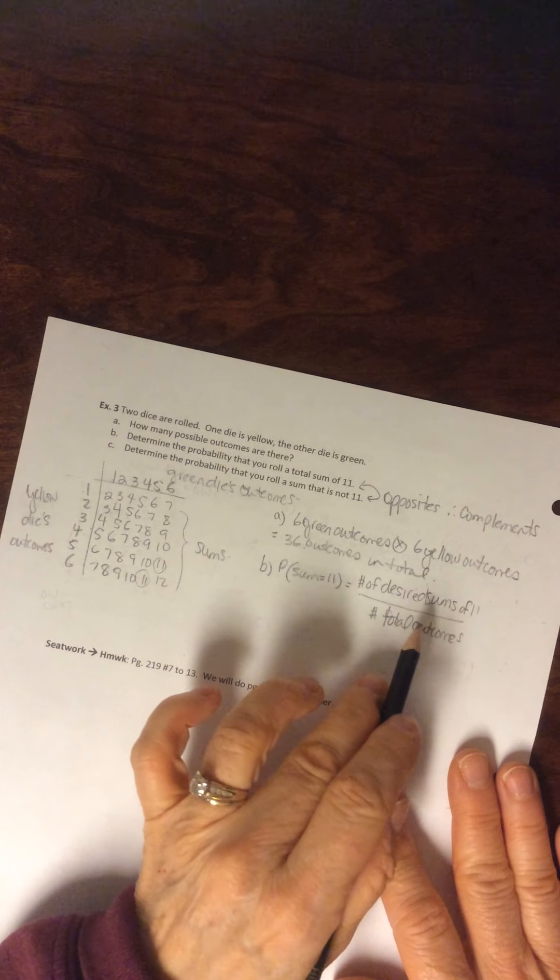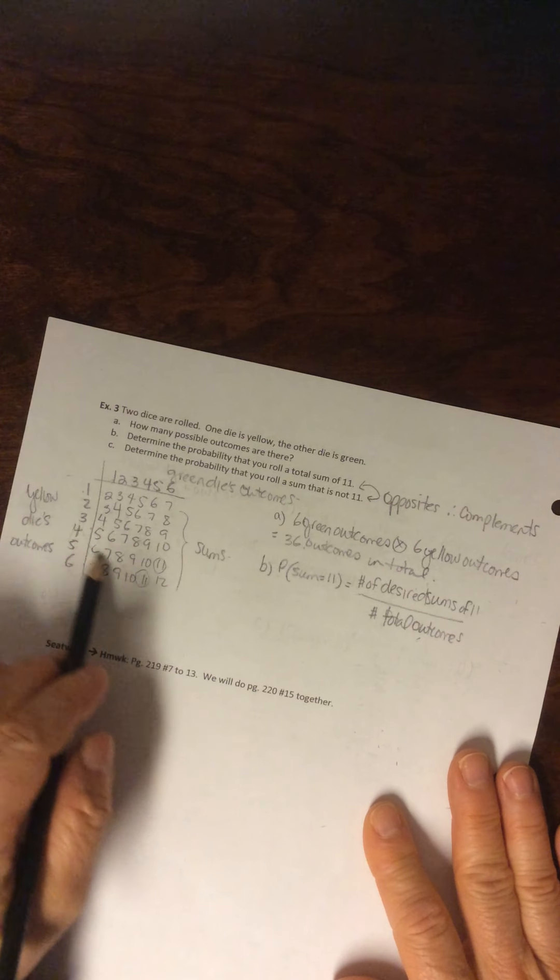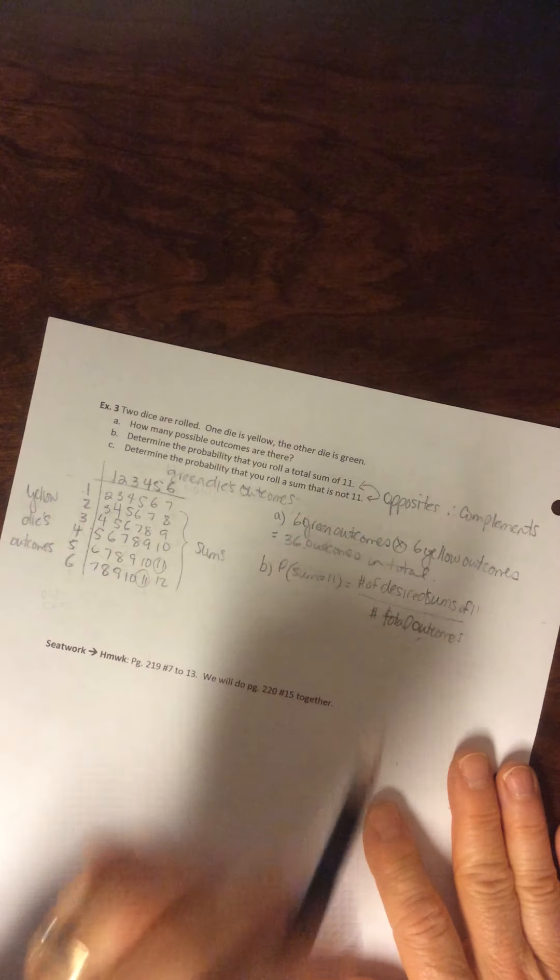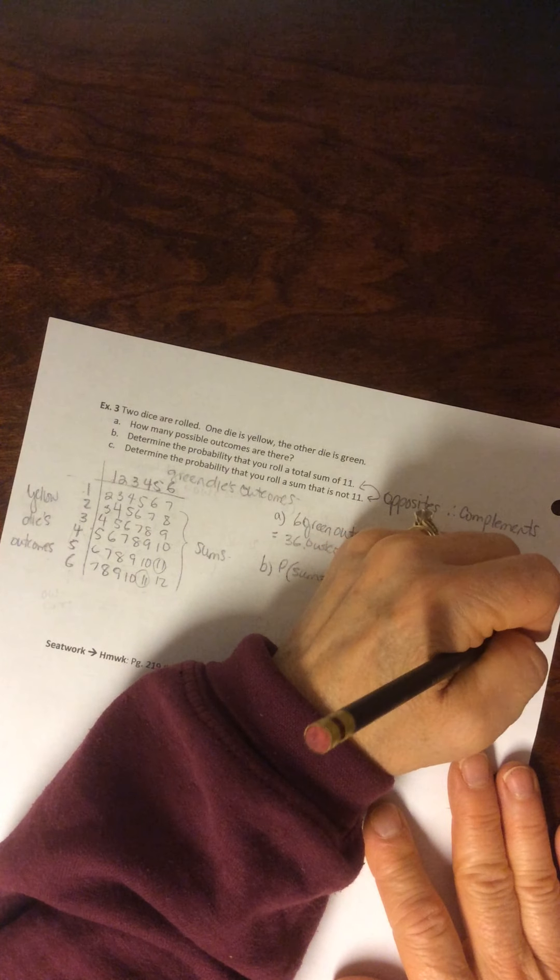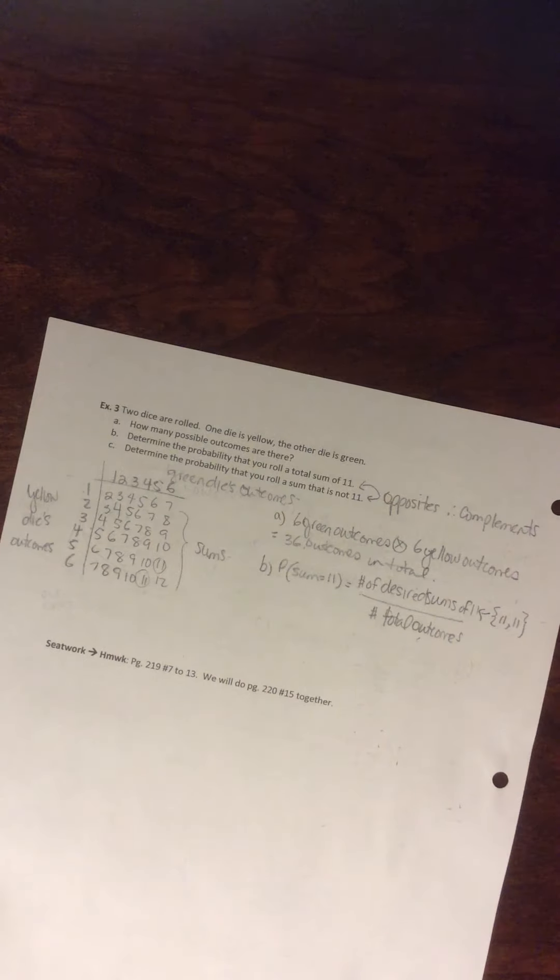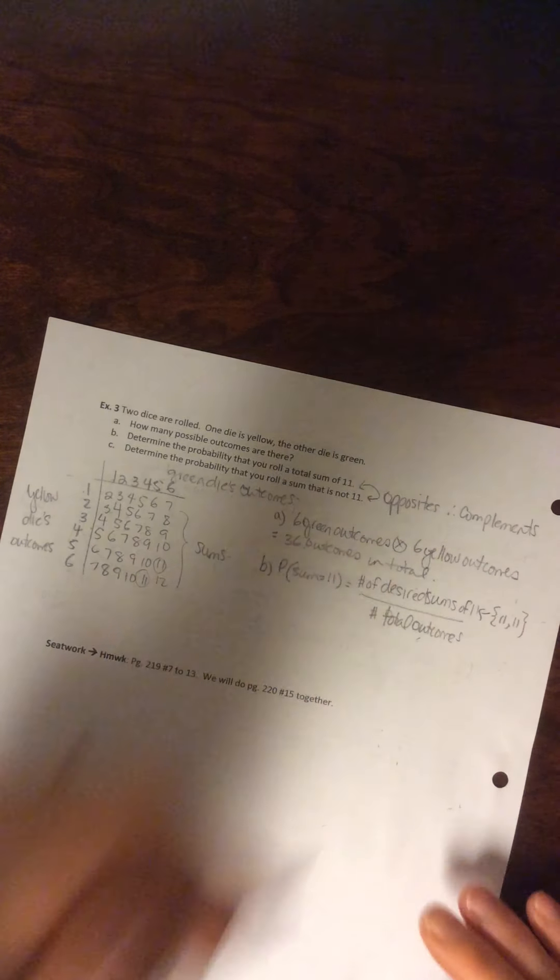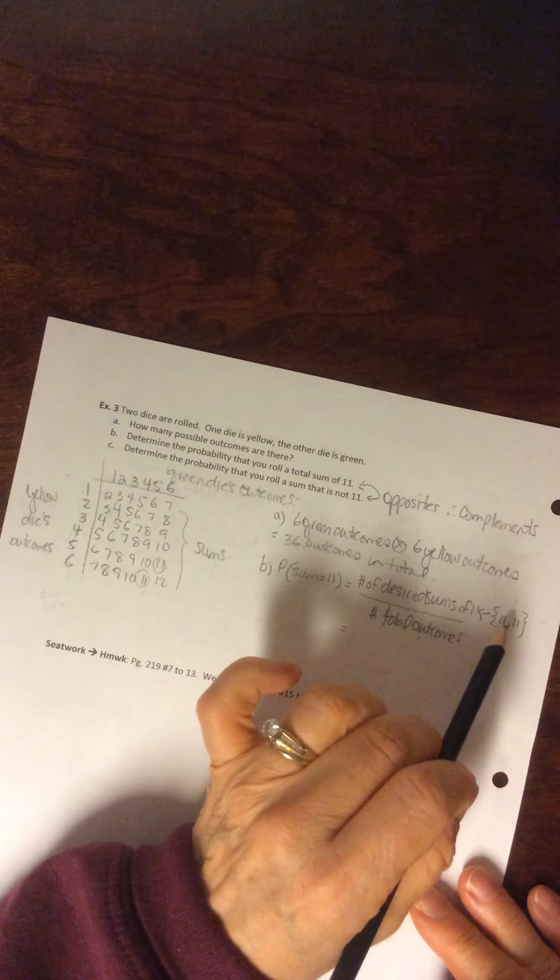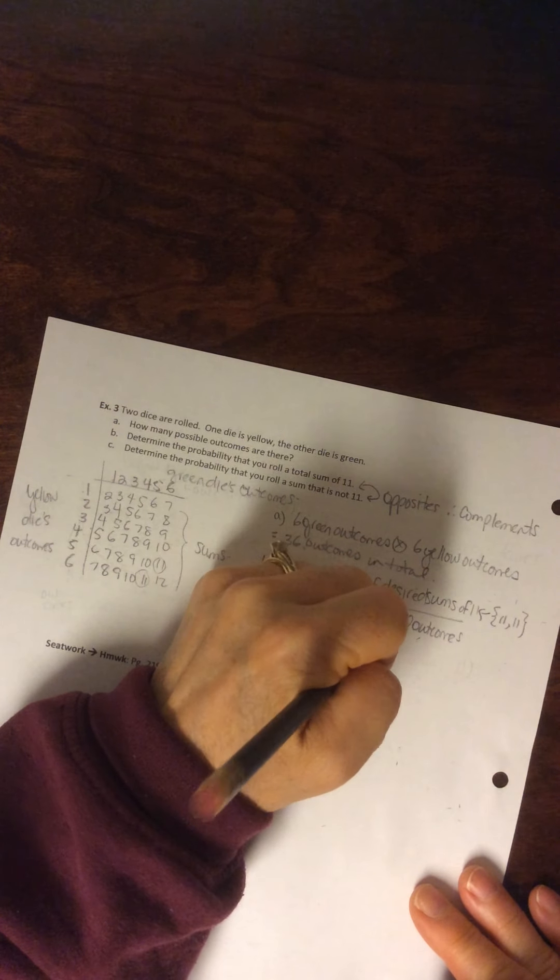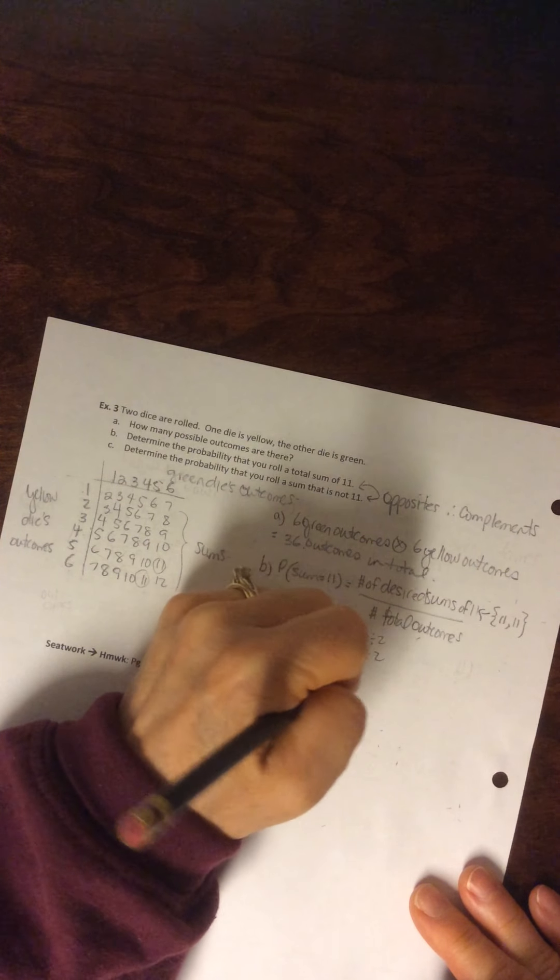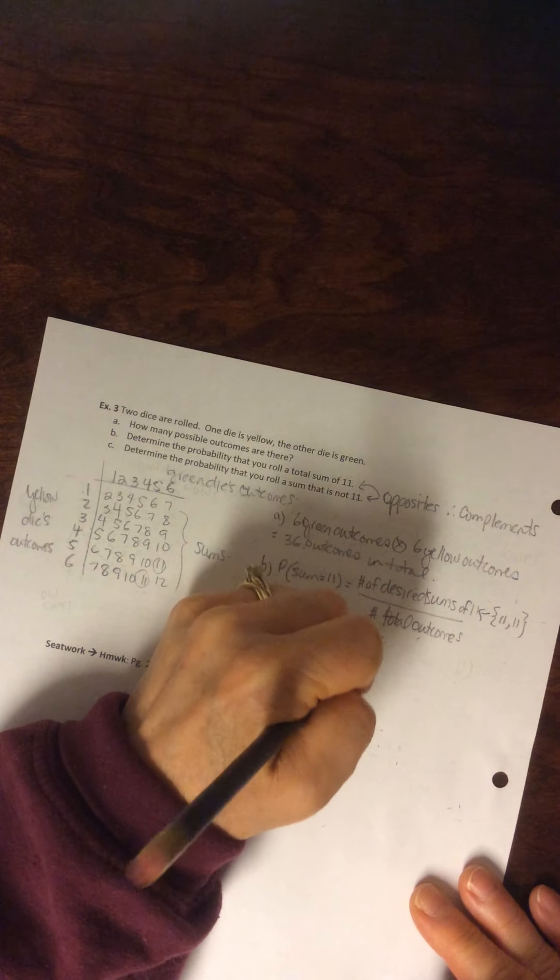So your sample space are all of these values, but your event space is an 11 and an 11, right? So in total, the number of desired outcomes are 2 divided by 36, and then divide both by 2, so you get 1 out of 18.